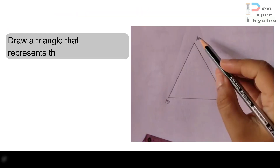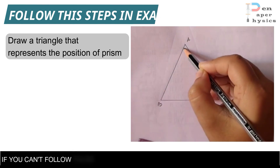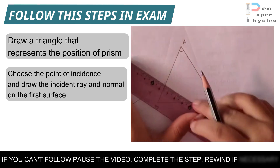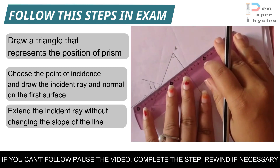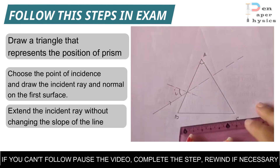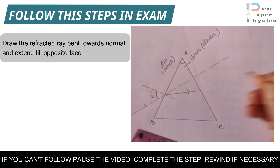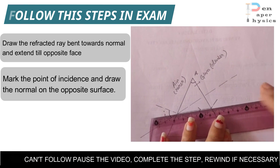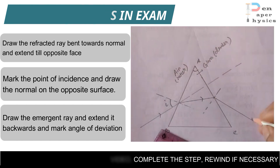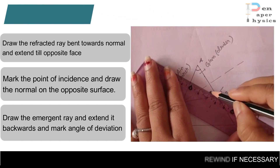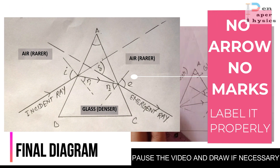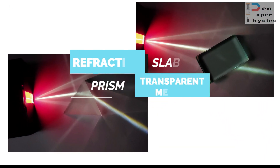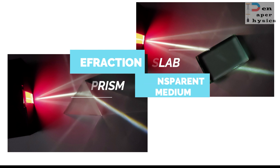How to draw the prism diagram in exam: First, draw a triangle representing the prism. Choose the point of incidence and draw the incident ray and normal on the first surface. Extend the incident ray without changing its slope. Draw the refracted ray bending towards the normal. From the opposite surface AC, draw a normal and draw the emergent ray bending away from the normal. Remember: no arrow means no marks, and you must label it properly. What you observe here is the path of light through glass slab and prism that I have performed at home.